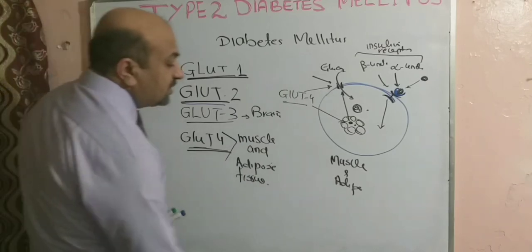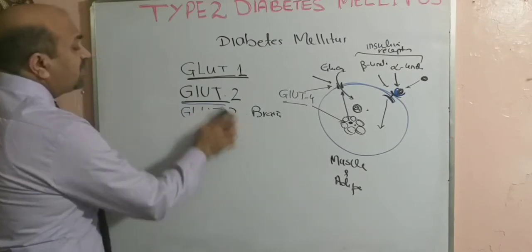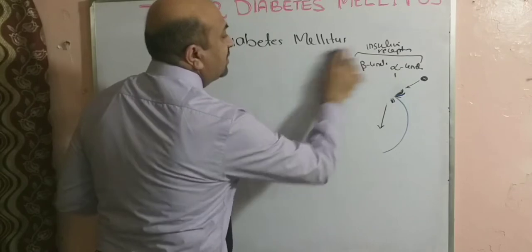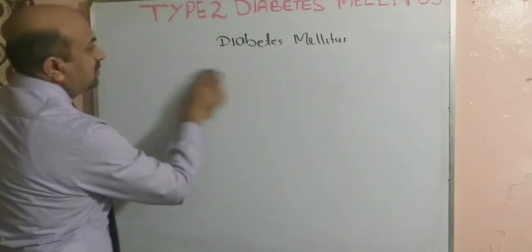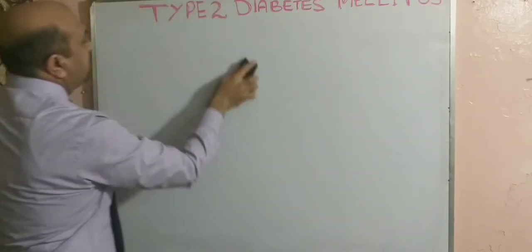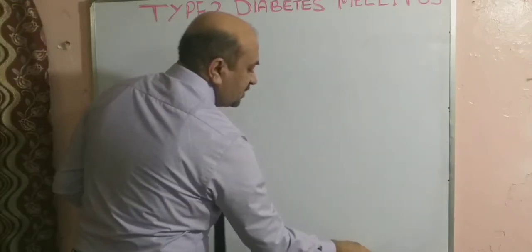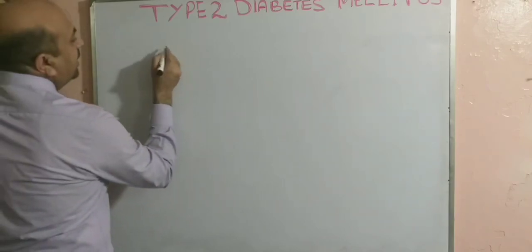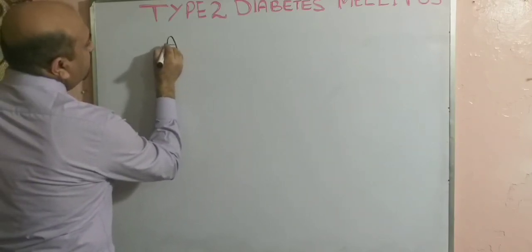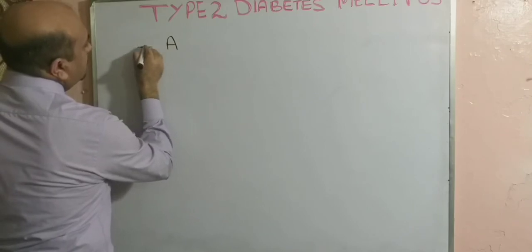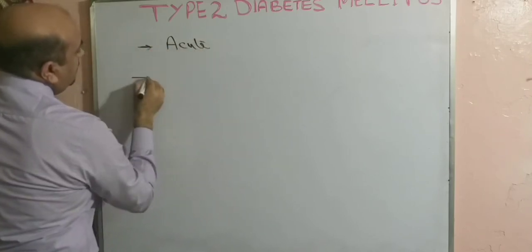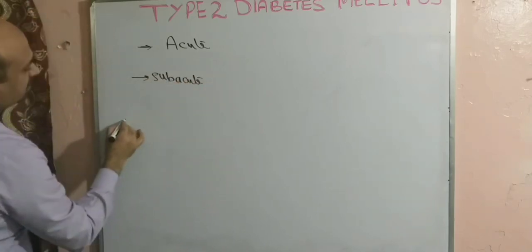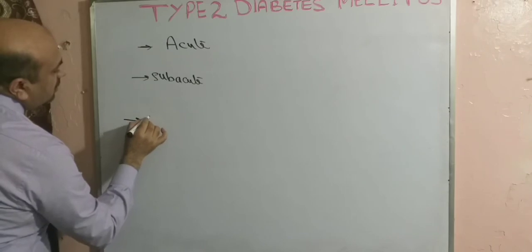What are the clinical features of diabetes mellitus? The clinical presentation can be acute, sub-acute, or the patient may sometimes present with complications directly.